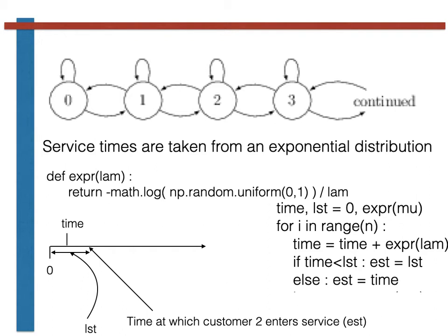In the code, we can thus write that EST, the second customer's enter service time, is equal to LST if time is less than LST. In other words, the second customer's enter service time is equal to the first customer's leave service time if that second customer arrives before the first customer is finished.